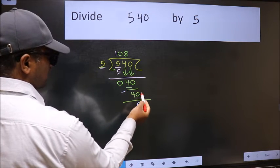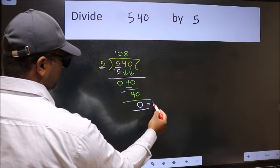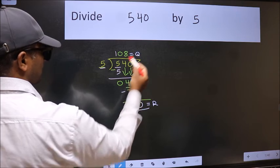No more numbers to bring it down. So we stop here. This is our remainder and this is our quotient.